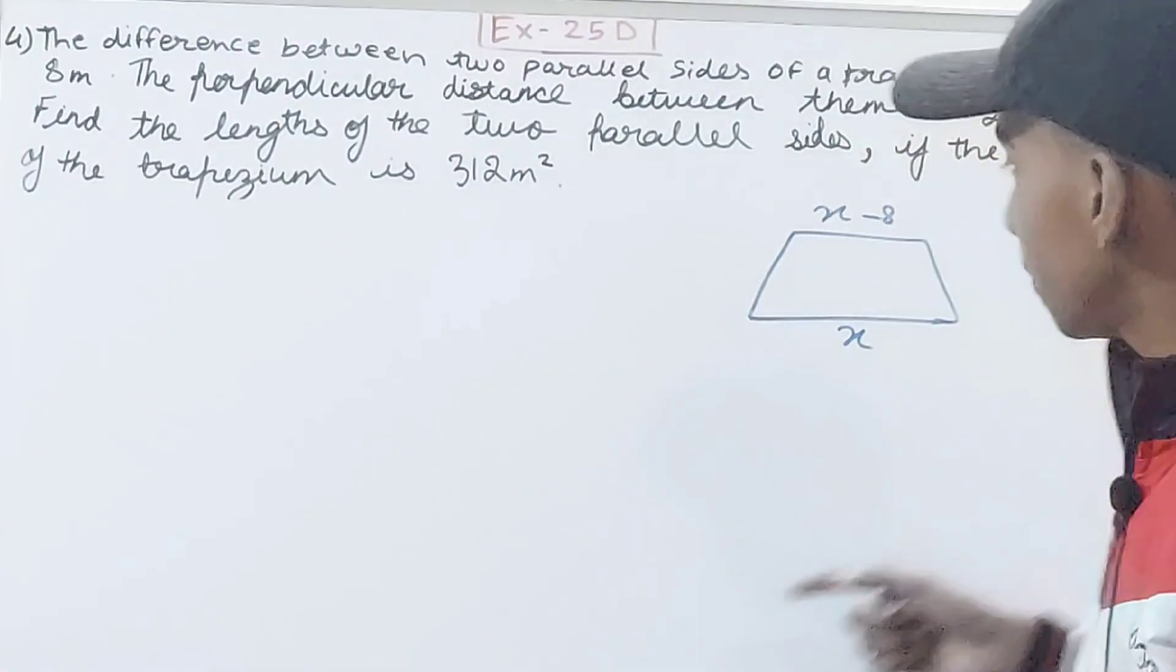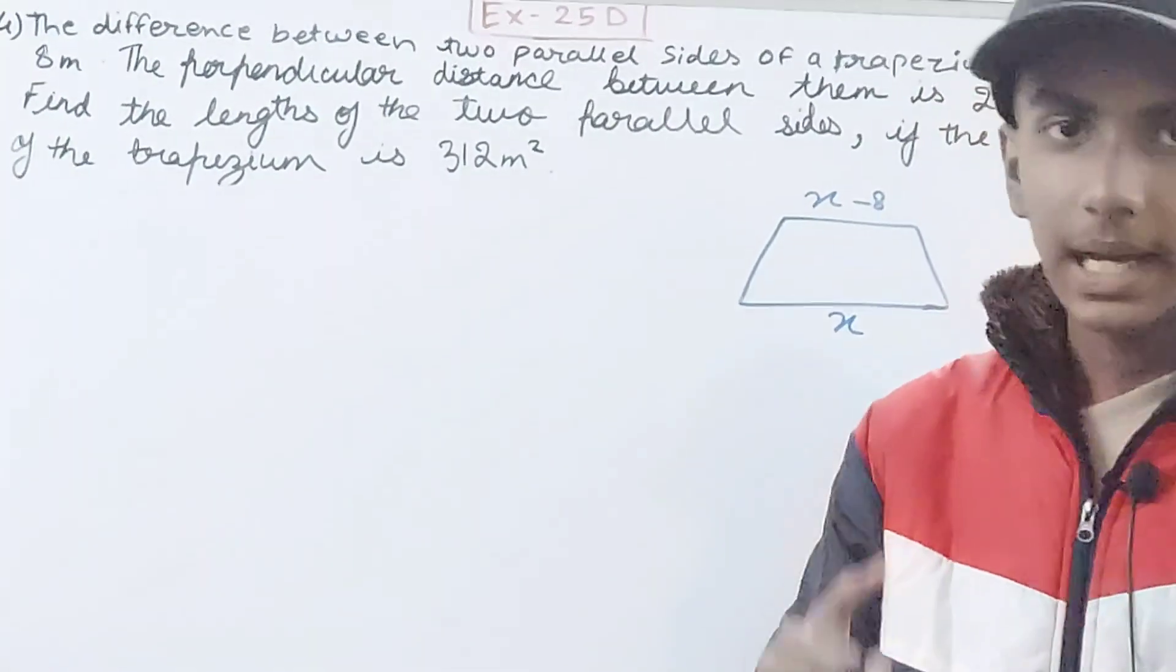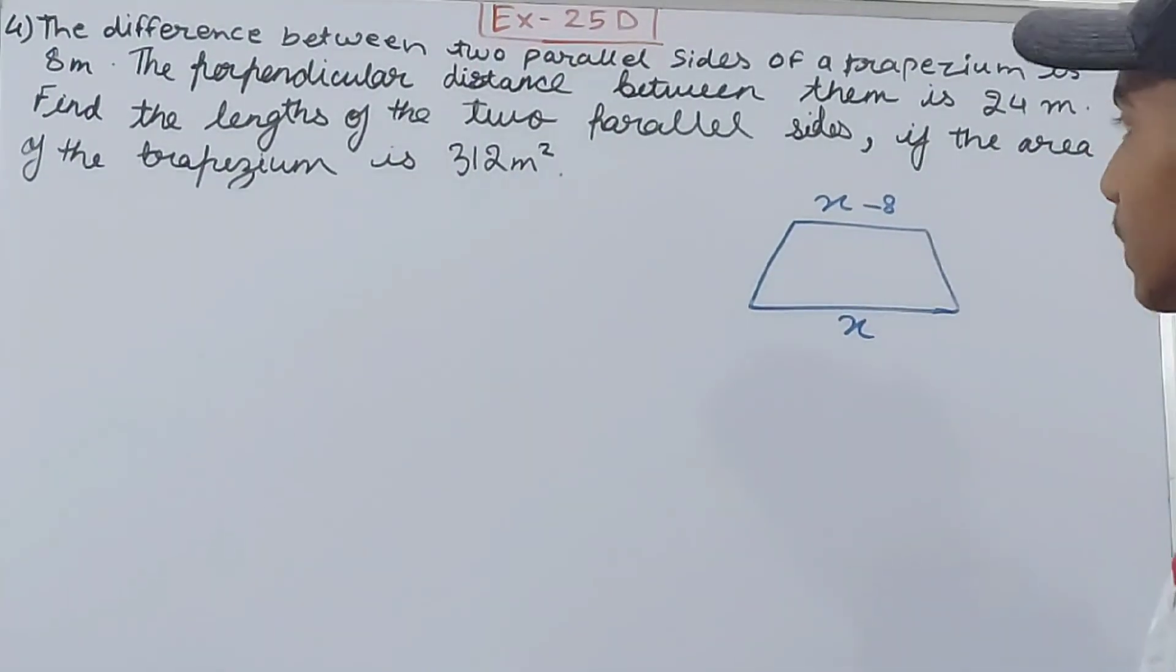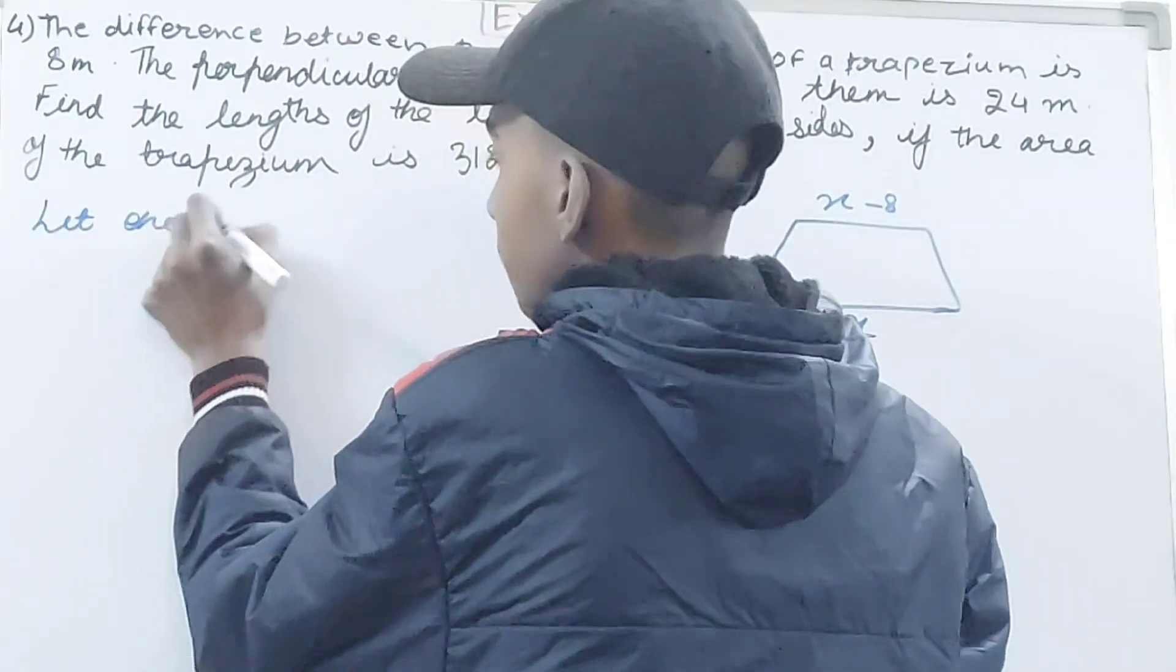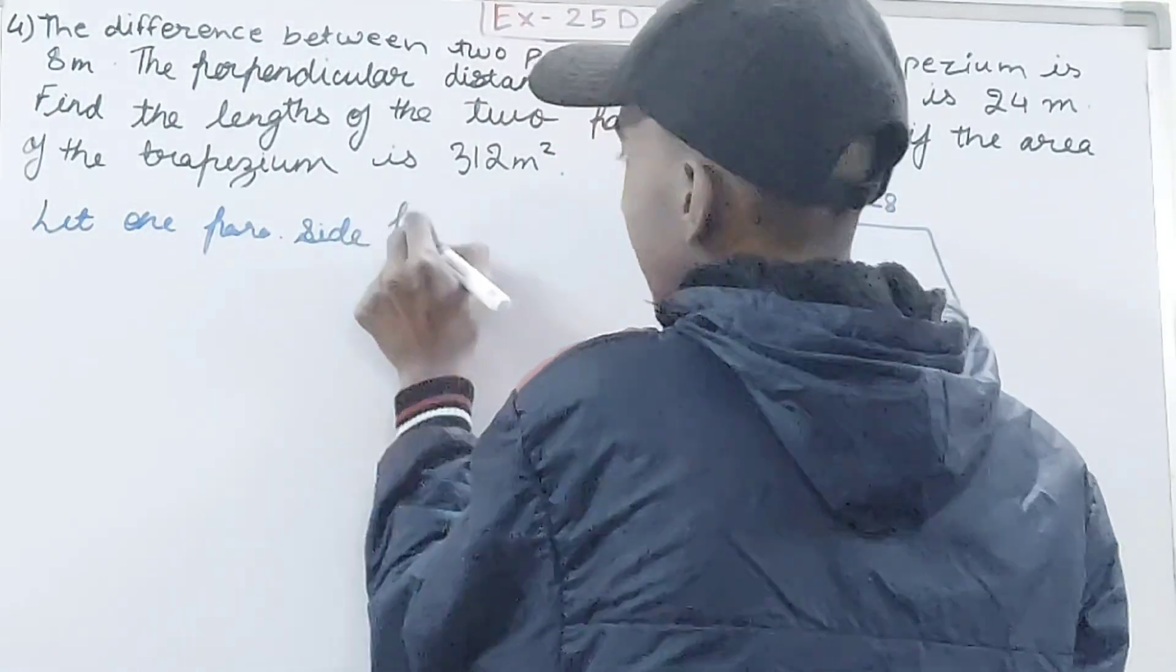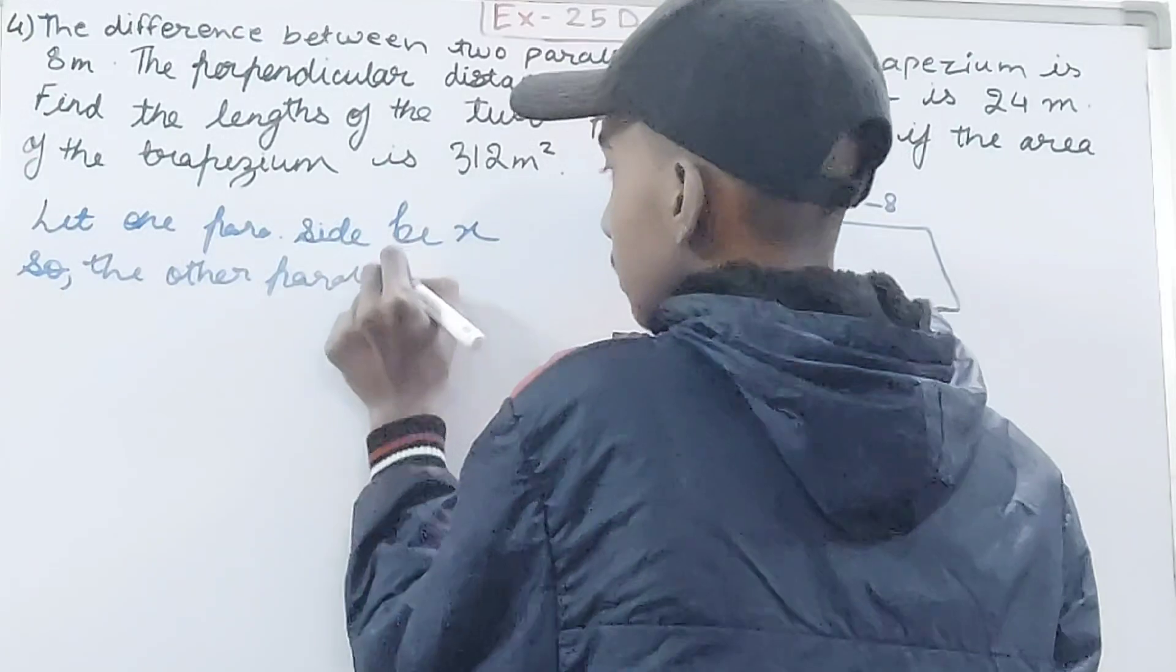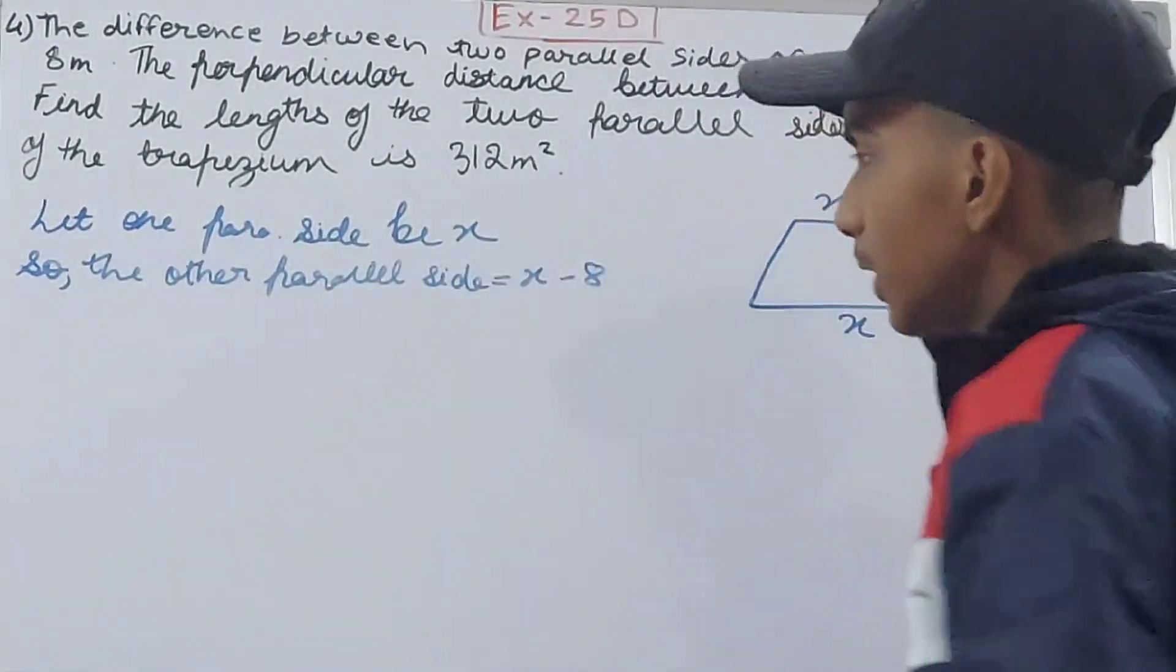Difference means if I subtract the smaller from the greater, I should get 8 as the remainder, right? So X minus 8. Now you can see, let one parallel side be X, so the other parallel side equals X minus 8.